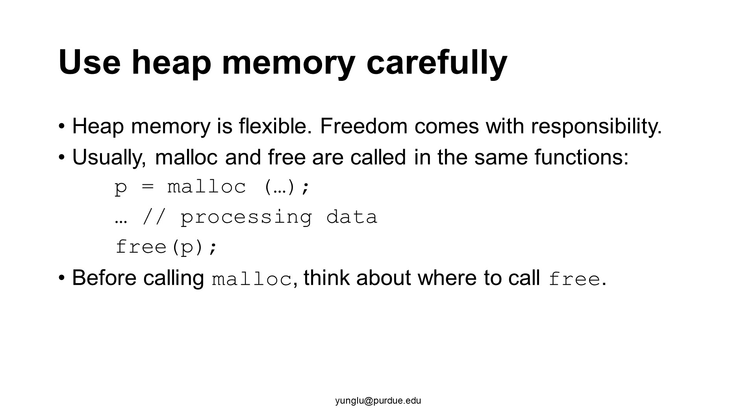A good strategy of writing correct programs is to think about malloc and free as pairs. When you write your programs, put malloc and free inside the same functions. The function allocates memory, uses the memory, and then release the memory. By putting malloc and free inside the function, the chance of mistakes is much lower. Before you use malloc, think about where free will be called.